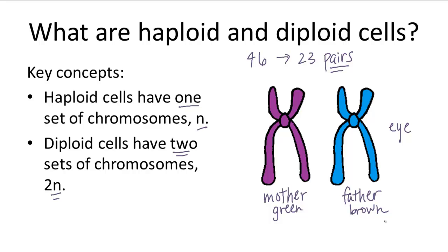Hence, humans are said to have 23 pairs, and not 46 separate chromosomes. A haploid cell is different — it only has one set of chromosomes, so there's only one chromosome for each chromosome type.